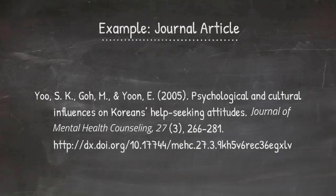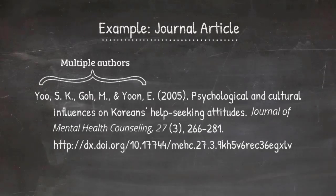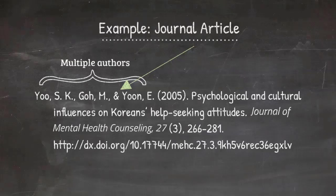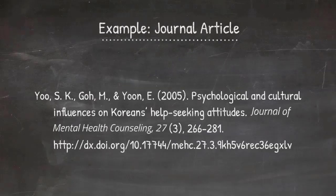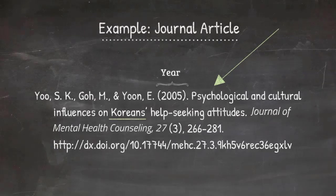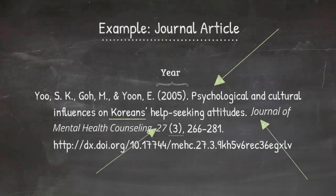Looking at a journal article example with multiple authors: you list the last names and initials, and use an ampersand — not the word 'and' — before the final author. That's one of the technicalities in APA to watch out for. Then the year, the title of the article in sentence case — note 'Koreans' is capitalized as a proper noun — followed by the journal name, volume number 27 in italics, issue number 3 in parentheses and not in italics, comma, and the page range 266 to 281, followed by the DOI in URL format.